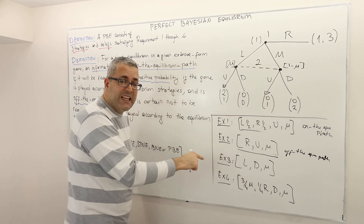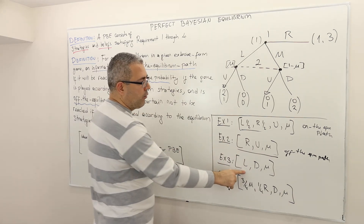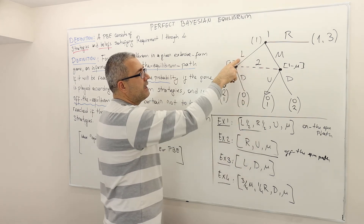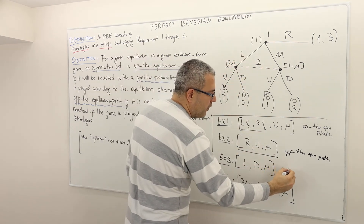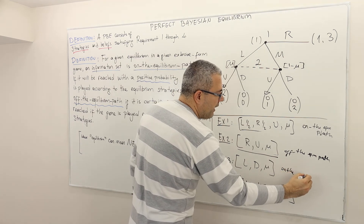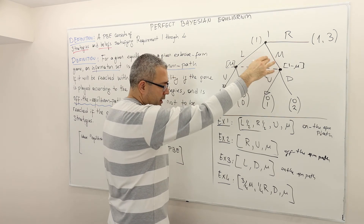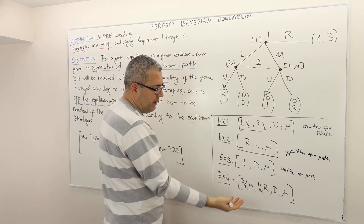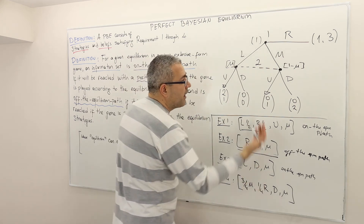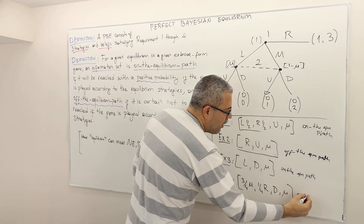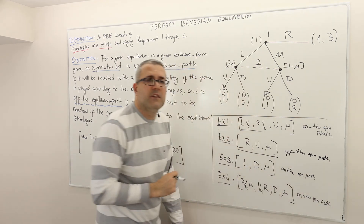According to the third profile, player one is going to play left with probability one — therefore this is on the equilibrium path. And finally, with three-quarters L and one-quarter R, according to this equilibrium strategy profile, this information set is also on the equilibrium path. So it's as simple as this.